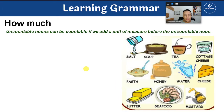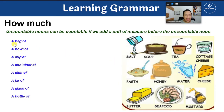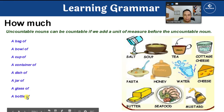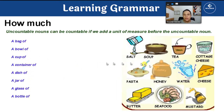One thing you need to keep in mind is that uncountable nouns can be countable if we add a unit of measure before the uncountable noun. For example: a bag of, a bowl of, a cup of, a container of, a dish of, a jar of, a glass of, a bottle of. They are uncountable, but if we add a unit of measure before the noun, we turn them into countables.